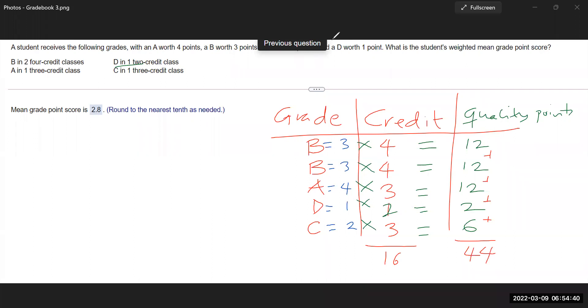So to find the GPA or the grade, the mean grade point, which is the same as the GPA, you're going to do the quality points, which is sum of the quality points, which is 44 divided by the total credit, which is 16.